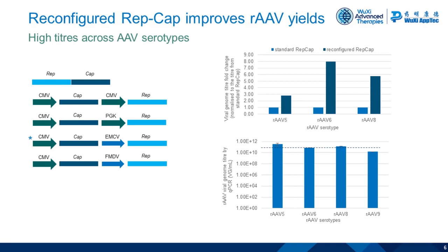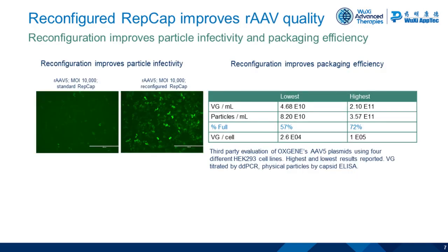Although we're showing AAV5, 6, and 8 here, we've applied this new design to all of the serotypes available at the moment and we see benefits for all of them. Looking at the bottom graph, the absolute titers produced by these new constructs are around 10^11 genome containing units per mL. Some serotypes are slightly higher and some slightly lower, but we're aiming for above 10^11 per mL for each of these serotypes.